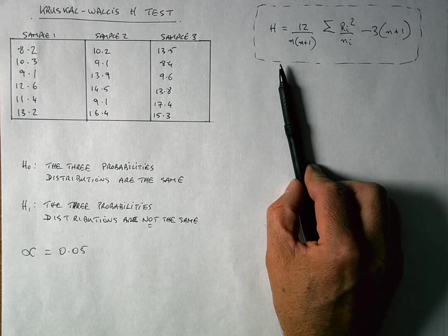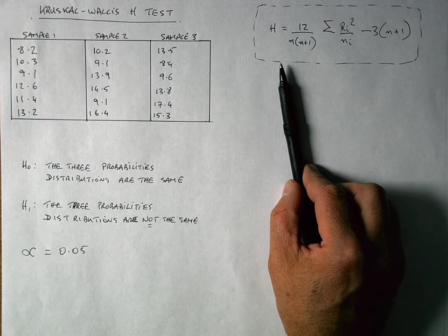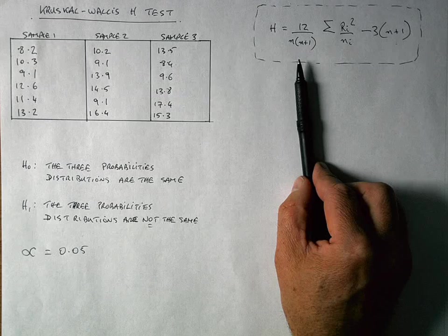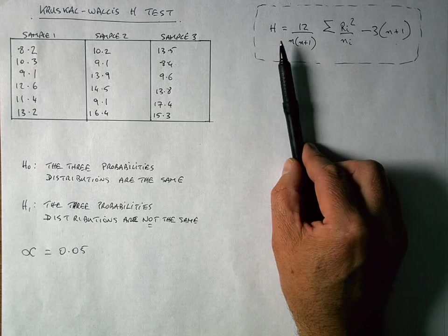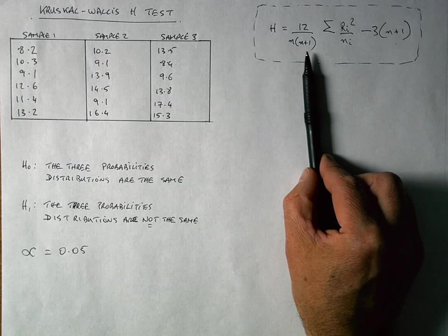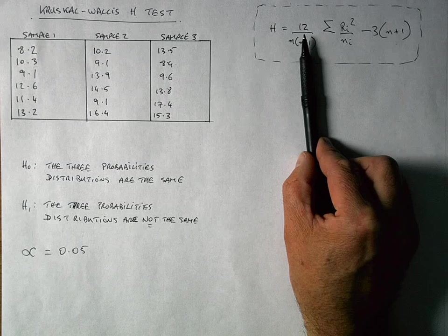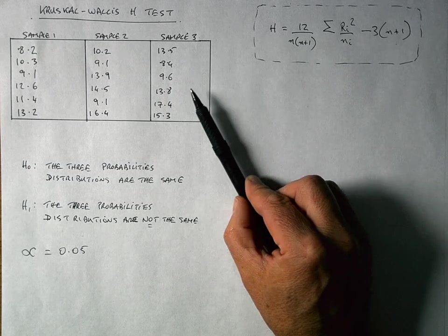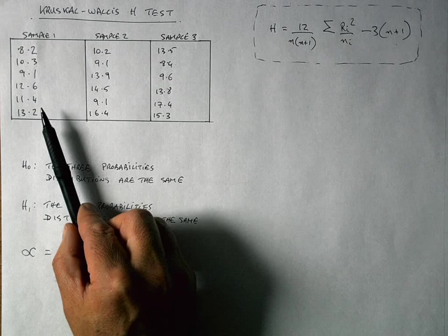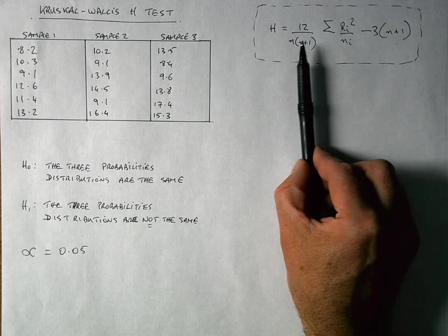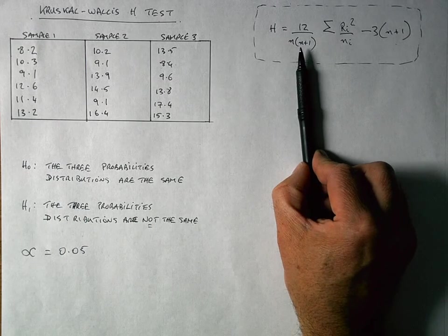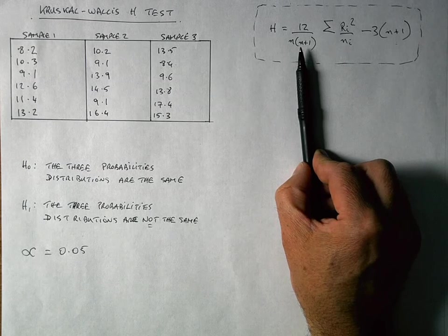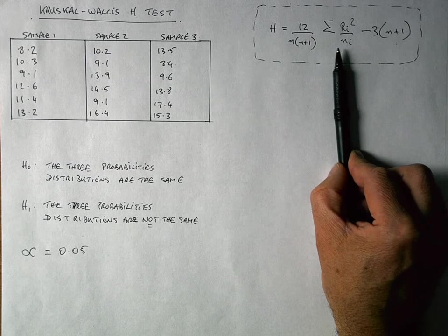Now, our formula for calculating the H-test, or the H-statistic, looks a little bit awkward at first. But when you read through it, it's relatively straightforward to work through. So our H-statistic is equal to, it's in three parts. So this first part here is 12 divided by N times N plus 1. Now, N is the total number of values. So in my case here, I've got 6 plus 6 plus 6 values, which is 18. So N is going to be 18 in this version of the formula.